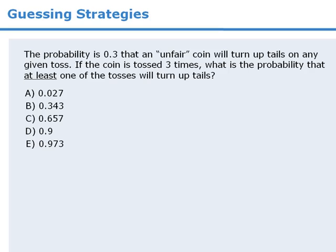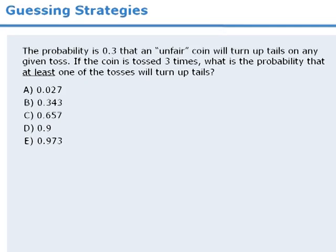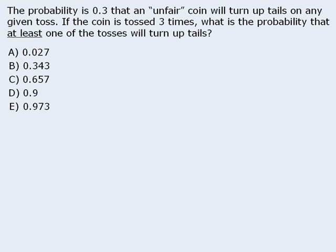Without pausing this video, try to get a feeling for what the correct answer to the question might be. Here we have an unfair coin where the probability of getting tails on a toss is 0.3. If we toss the coin three times, what is the probability that at least one of the tosses will turn up tails?